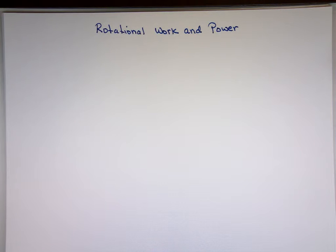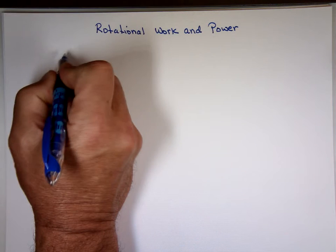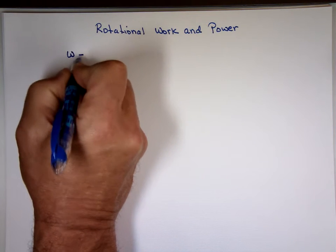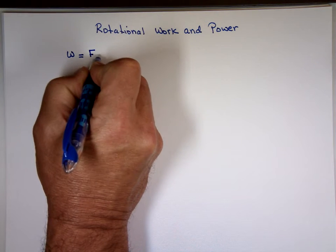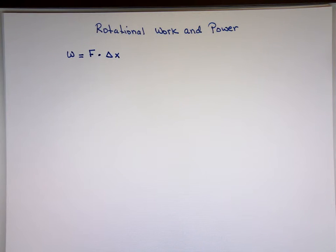We need to create an equation for work for things that spin. So now, we know from before work is force times distance. Remember that? That doesn't help me. This is for linear, things that are moving in a straight line. I need to change it.